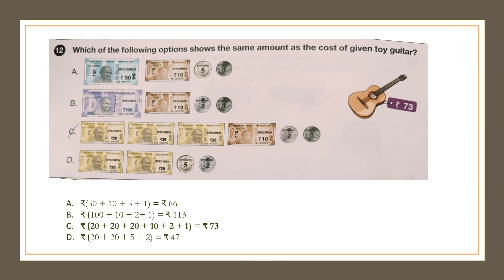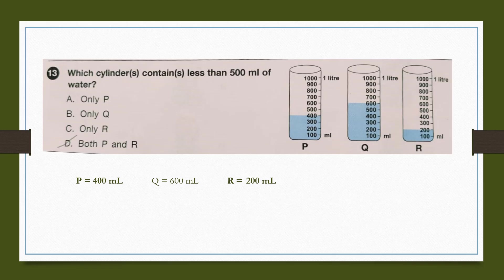Question number 13: Which cylinder or cylinders contains less than 500 ml of water? P is 400 ml, Q is 600 ml, and R is 200 ml. P and R both contain less than 500 ml of water. So our answer is option D.